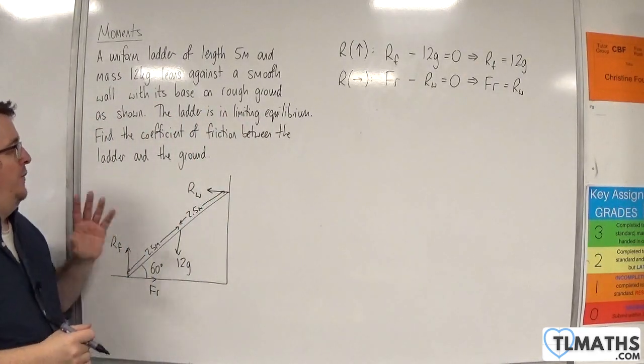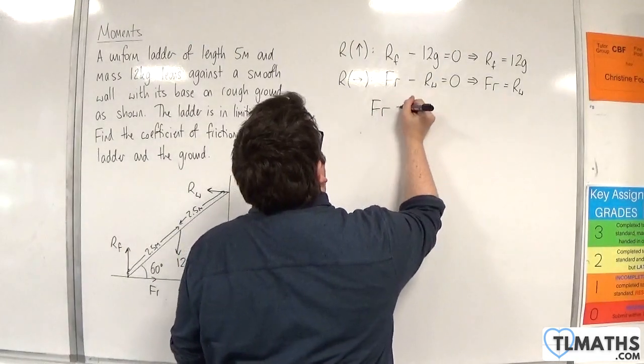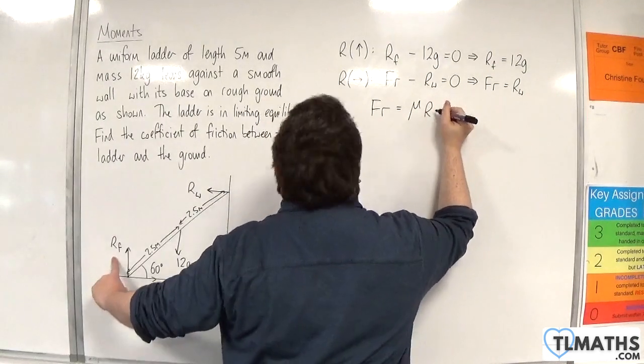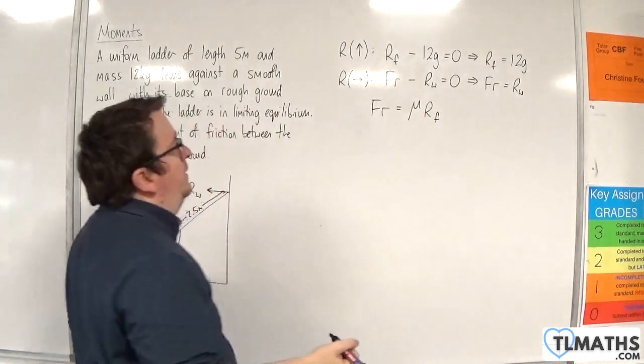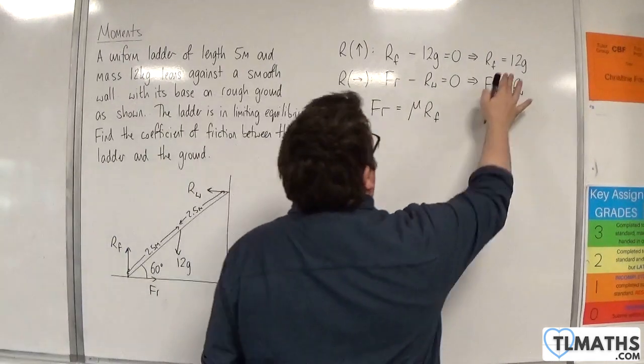Now, it's in limiting equilibrium, so we know that the friction is going to be equal to mu times the normal reaction force with the floor. Now, I've got RF, that's 12g.